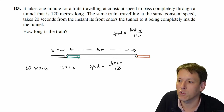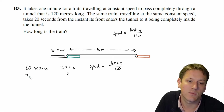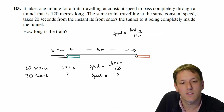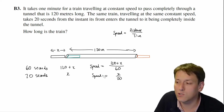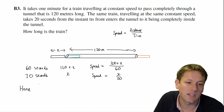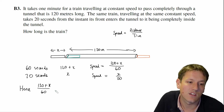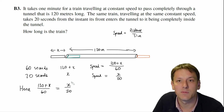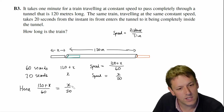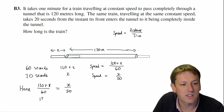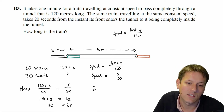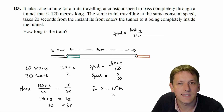So the speed is (120 + x) / 60. In the second situation, it takes 20 seconds for the train to move just its own length x into the tunnel, giving speed = x / 20. Since the speed is the same in both cases: (120 + x) / 60 = x / 20. Multiplying both sides by 60: 120 + x = 3x, so 120 = 2x, giving x = 60 metres. That must be the length of the train.